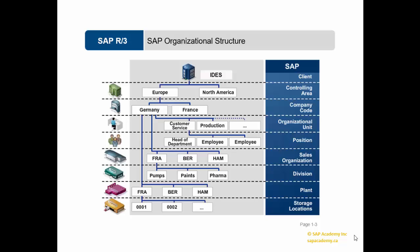Personnel structure displays the position of individual people in the enterprise as a whole. It comprises of employee groups and employee subgroups such as active, retired, contractual, and so on. This was an important topic, and we hope you have remembered SAP organizational structure per your corresponding module. Once you understand this and its hierarchy, it will be very easy for you to understand how SAP works.